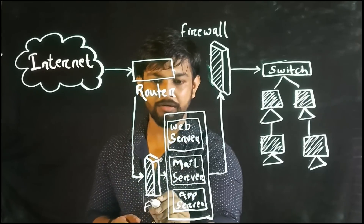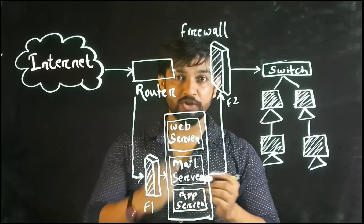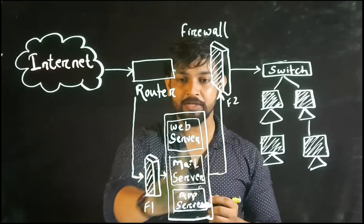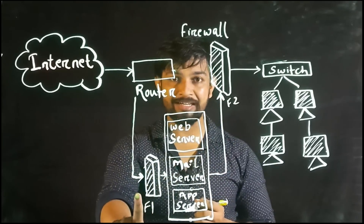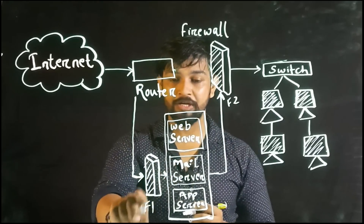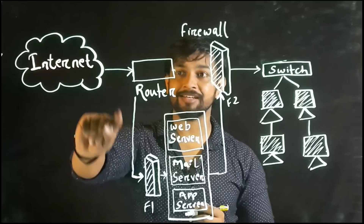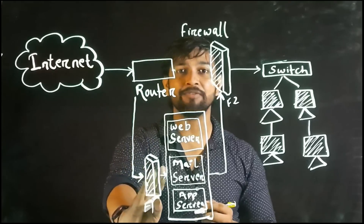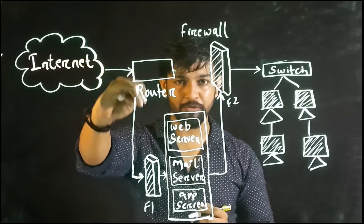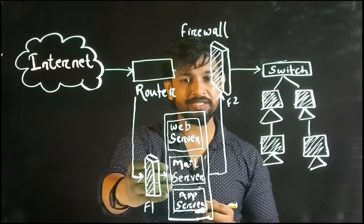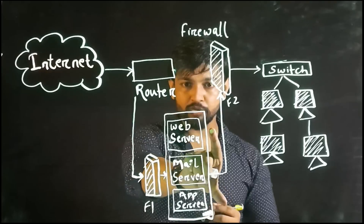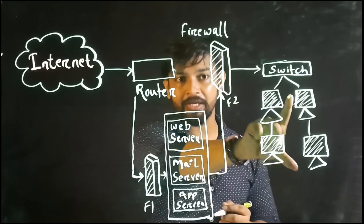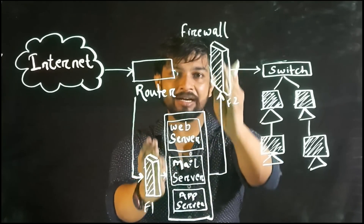I am using two firewalls — I'll label them F1 and F2. One firewall before the servers (web server, mail server, and application server) and one firewall after them. So I have two layers of protection: one external firewall (F1) and one internal firewall (F2). F1 comes into contact with all external traffic first. If a malicious intruder comes through mail or a phishing attack and F1 is not able to detect it, it reaches the servers — but it will not get inside the switch or the internal company systems because of the internal firewall F2.